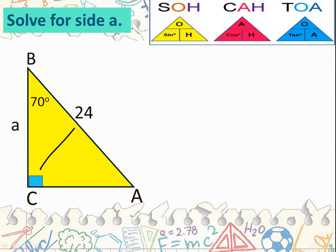So we have the right angle here, and this is the hypotenuse. With respect to our given angle of 70 degrees, the side close to it is side a, which is our adjacent side.